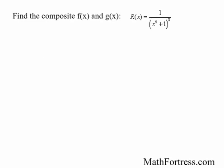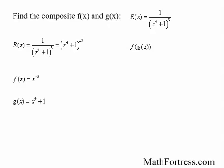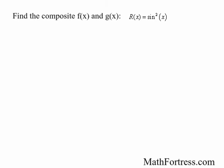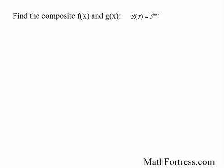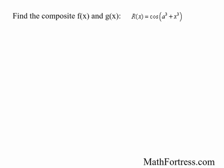Let's try r of x equals 1 over the quantity x to the power of 4 plus 1, raised to the power of 3. First we rewrite this using a negative power: the quantity x to the power of 4 plus 1 raised to the power of negative 3. The outer function is x to the power of negative 3 and the inner function is x to the power of 4 plus 1. How about r of x equals sine squared of x? Sine squared of x is the same as the quantity sine of x squared, so the outer function is x squared and the inner function is sine of x. How about r of x equals 3 to the power of sine of x? The outer function is 3 to the power of x and the inner function is sine of x. Finally, r of x equals cosine of the quantity a cubed plus x cubed, where a is a constant. The outer function is cosine of x and the inner function is a to the power of 3 plus x to the power of 3.